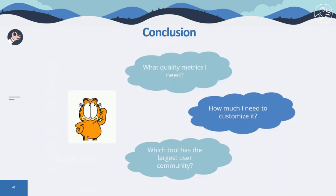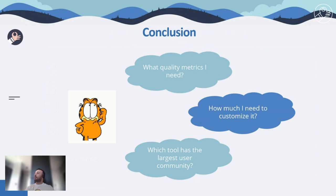As a conclusion, if you need to apply one of these solutions to your pipeline, you should compare features according to your needs and answer these questions: What kind of quality metrics do I need to ensure data quality, and which tool provides the most quality check options? Which requires the least customization cost to my pipeline for having those data quality components? And which one has the largest user community and most active repository on GitHub?